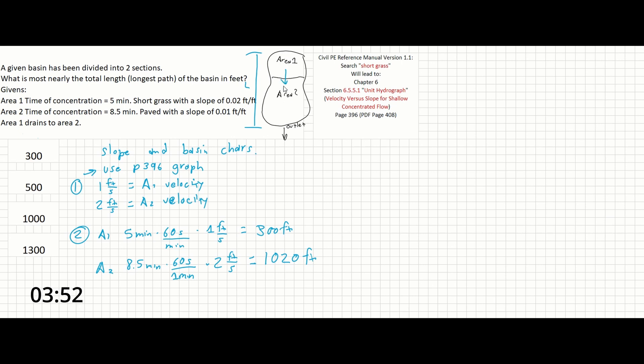Since area 1 drains into area 2, we sum these together to get 1,320 feet as our total length. The closest answer is the fourth option, and that's all it takes to solve this problem.